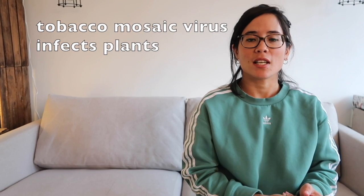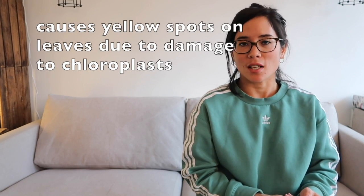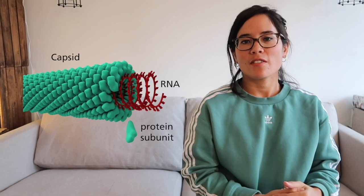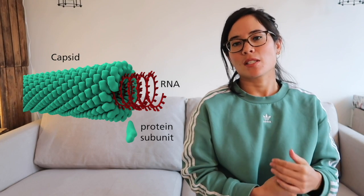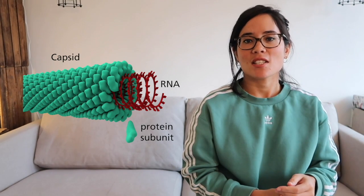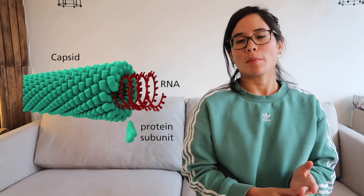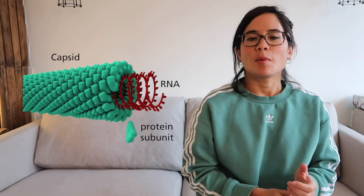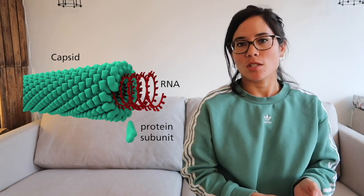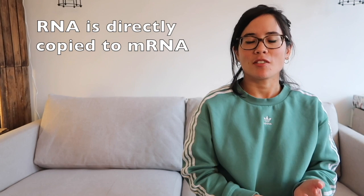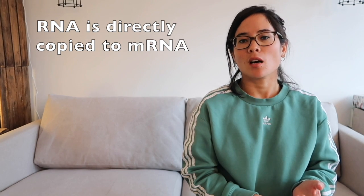The tobacco mosaic virus infects plants and gives them characteristic yellow spots, inhibiting their ability to photosynthesize. It has a very different shape to the lambda virus — the capsid is arranged as a spiral made up of little building blocks of polypeptides. Within that spiral you find the RNA, which is the nucleic acid of the tobacco mosaic virus, and the RNA is directly copied to become mRNA.